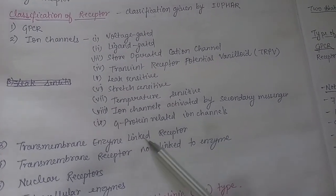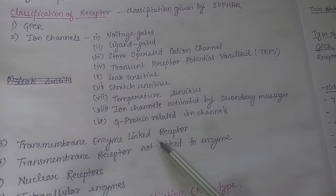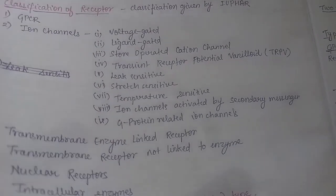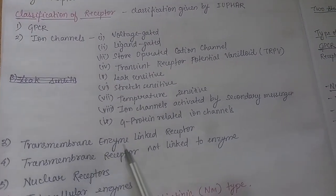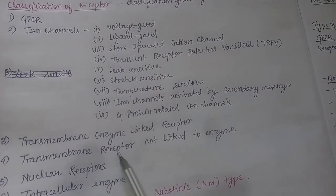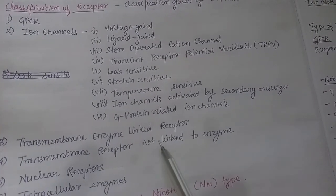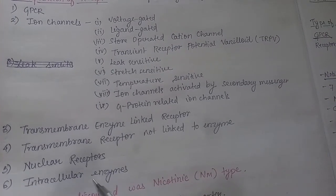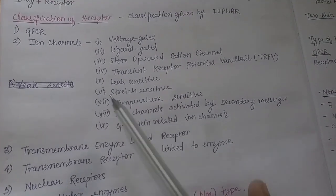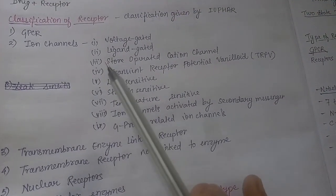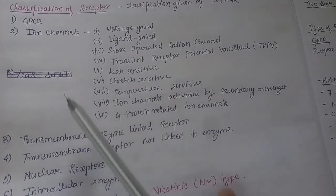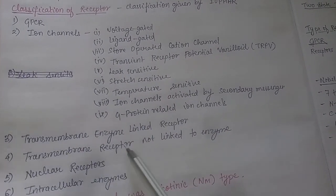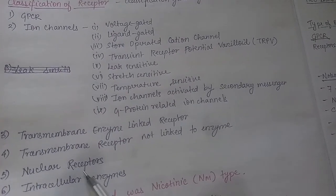The third classification is transmembrane enzyme-linked receptor. The fourth is transmembrane receptor not linked with enzyme. The fifth is nuclear receptor, and the sixth is intracellular enzyme. So the six basic classifications are: GPCR, ion channels, transmembrane enzyme-linked receptor, transmembrane receptor not linked with enzyme, nuclear receptors, and intracellular enzymes.